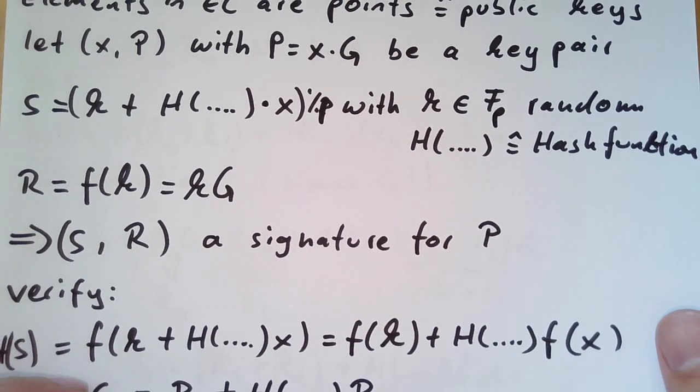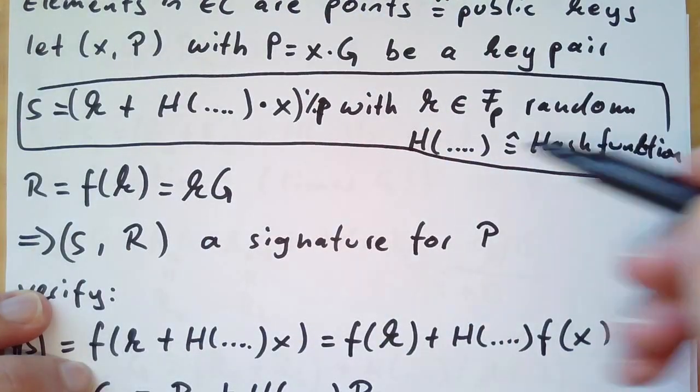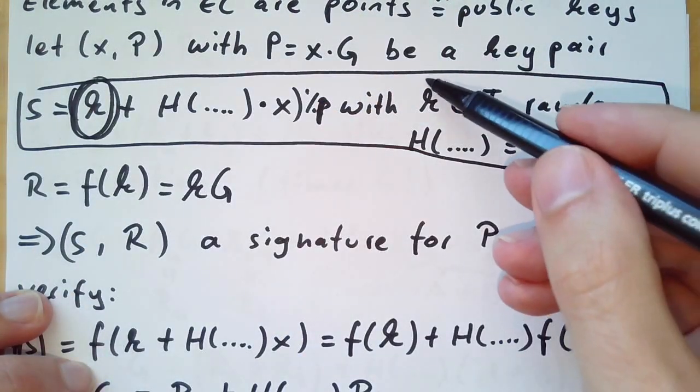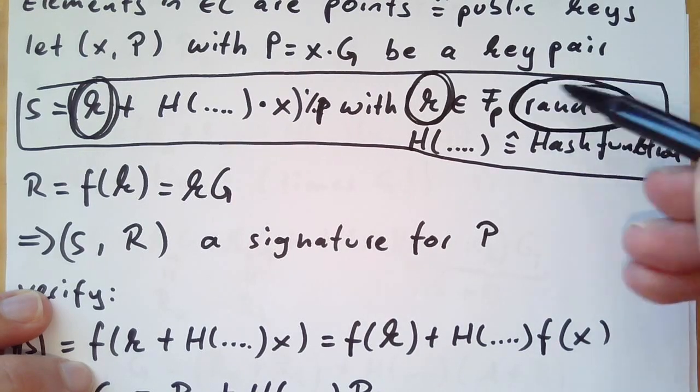We remember from the first and second part of this video series the signature equation, which has this scalar k, and we remember that this was chosen completely arbitrary, completely random.